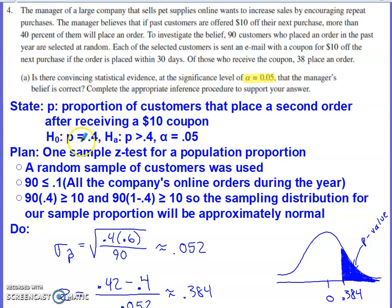The null hypothesis is an equation, and the alternative hypothesis is stated based on information in the problem. The manager believes more than 40% will place another order if given this coupon. So we're looking for significant evidence to suggest the manager's belief is likely true.